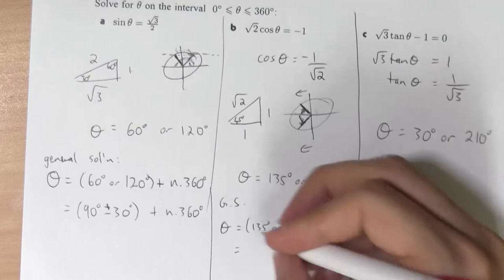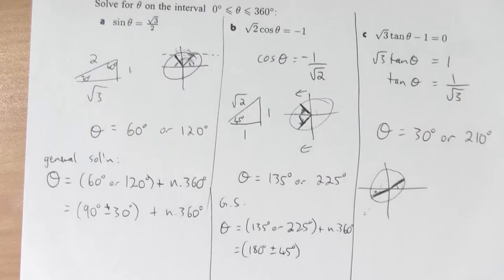Or, I actually think the better way to write it is, 180 plus or minus 45 plus some number of 360s. And that's my general solution.